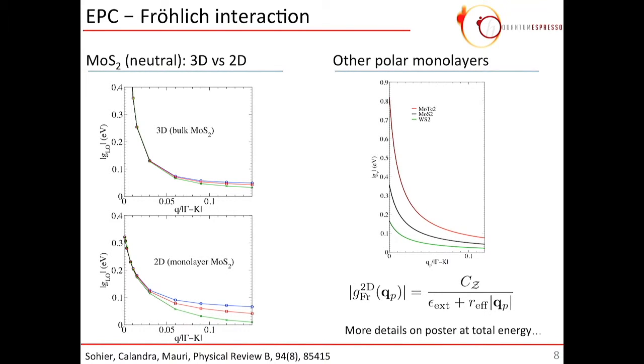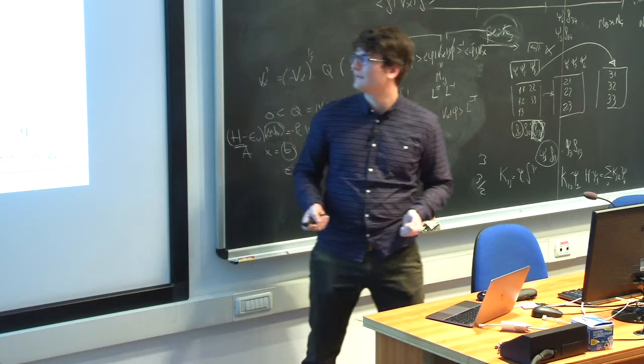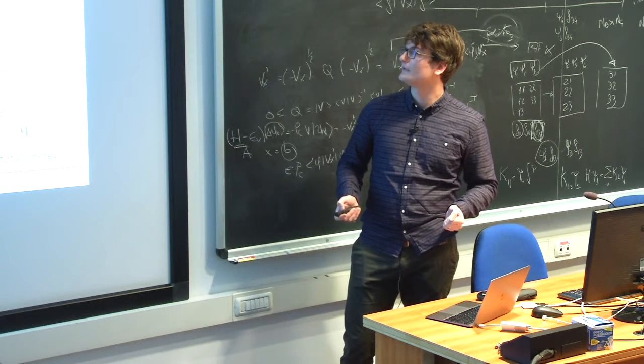We look at this electron-phonon coupling near gamma, this time in MoS2. First, in bulk MoS2, we see that the interaction diverges as one over the momentum, as the momentum gets close to gamma. Whereas, in 2D, in monolayer MoS2, this coupling goes to a finite value at gamma. Different colors here are different electrons in different bands and so on. But, it's the same kind of coupling every time. And again, this finite value at gamma here is something typically two-dimensional that you cannot get with the periodic images.